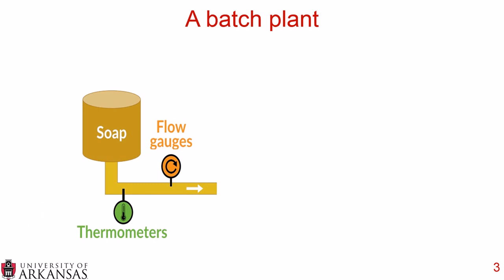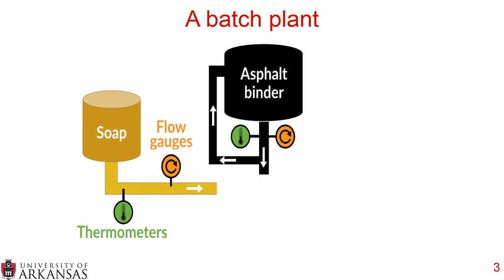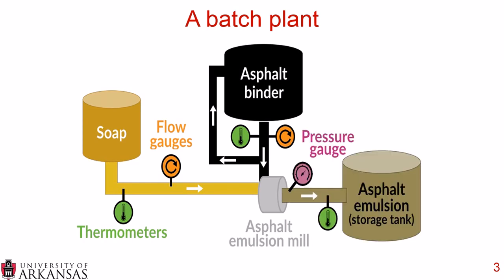The first is a batch plant, where you prepare a soap solution — which is the water, the emulsifier, and any chemicals all combined together — to a predetermined amount. You have the soap solution run through the pipes at a specific temperature and flow rate, and asphalt binder flowing at a specific temperature and flow rate, and those are joined together at the asphalt emulsion mill where the asphalt emulsion is produced.